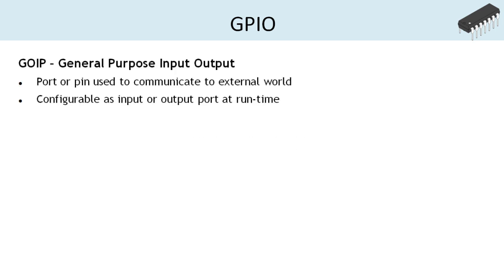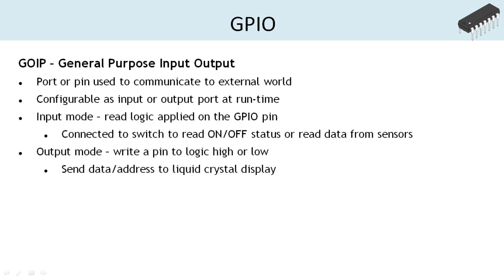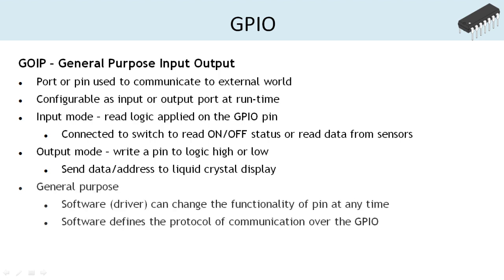General purpose input output, GPIO in short, is an interface on a microcontroller which is used to communicate with the external world. The GPIO port or a pin can be used as input to read the data from the peripheral device, or as output to send data and control different operations on the interface device. The mode — input and output, also known as read and write — of a pin is configured by the driver software at runtime and can be changed as per the requirement. The protocol used to communicate with the peripheral device is also defined by the driver software. For example, we can use a GPIO port to interface a liquid crystal display to communicate information to the external world.